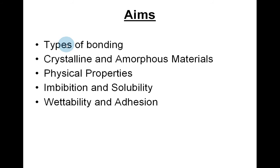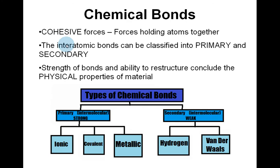The aims of this lecture are to go over various types of bonding within dental materials, crystalline and amorphous materials, physical properties, imbibition and solubility, and wettability and adhesion. Chemical bonds — cohesive forces — are forces holding atoms together. Chemical bonds consist of cohesive forces. The interatomic bonds can be classified into primary and secondary bonds, and the strength of bonds and their ability to restructure determine the physical properties of materials.